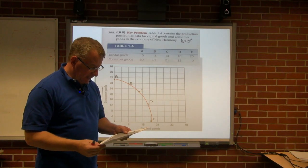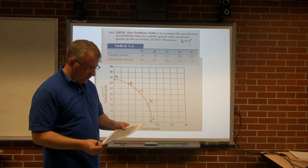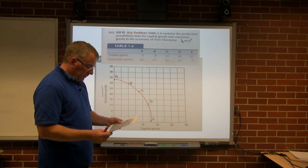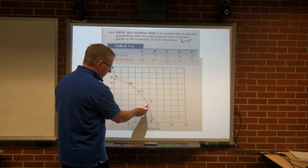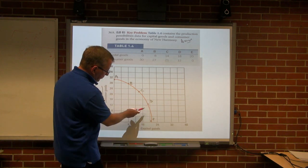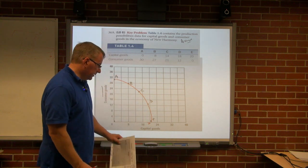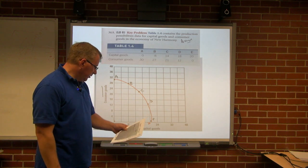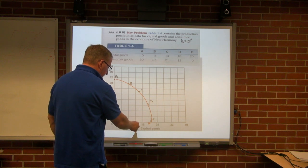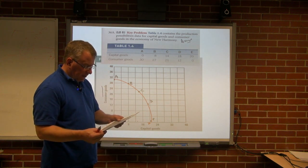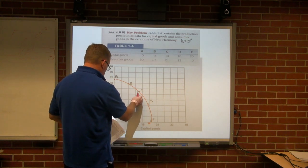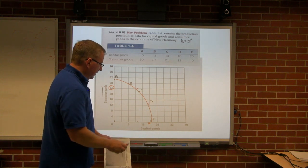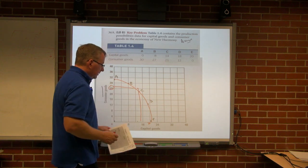Part B: assume the people of New Harmony have decided to produce 12 units of consumer goods. Looking at the graph, chasing over from the 12, we see point D. Chasing down, that's approximately 18 units of capital goods. The answer to B is 18. Part C: assume that the people of New Harmony have decided to produce 11 units of capital goods. 11 units is just about right here on the graph, and chasing up, approximately 24 units of consumer goods could be produced.